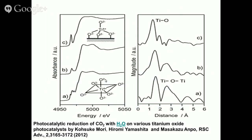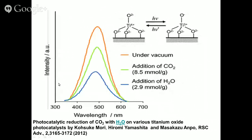The absorption occurs around 300 nm whereas the photoluminescence appears around 500 nm. What we are seeing is the radiative decay from the charge transfer excited triplet state — this triplet decays back to the original species, which is what we observe as the photoluminescence spectrum.